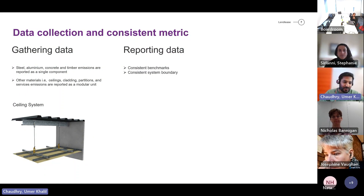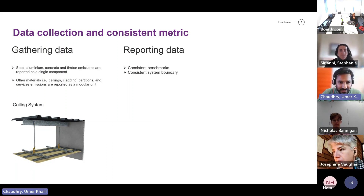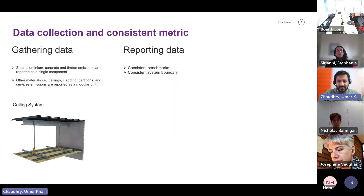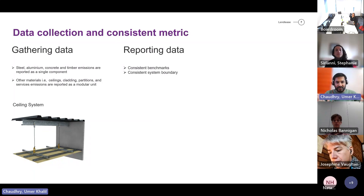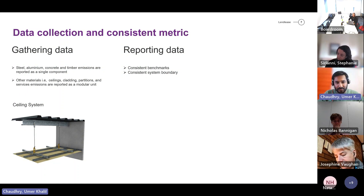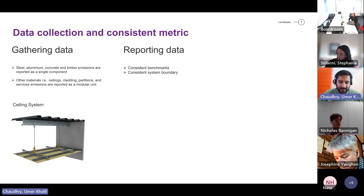The second factor is reporting data — we must be consistent with our benchmarking. No matter how good our sustainability initiatives are, if benchmarks are not consistent across all products and projects, we cannot get good results. When looking at EPDs we must also check system boundaries. As defined earlier, if we are looking at A1 to A3, we should compare only A1 to A3. If it is A1 to A5, it should be A1 to A5 across all projects consistently.